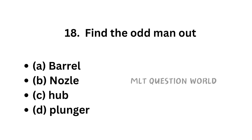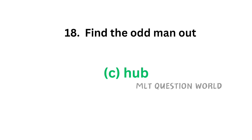Question number 18. Find the odd one out: option A, Barrel; option B, Nozzle; option C, Hub; option D, Plunger. These are the parts of syringe and needle. The correct answer is option C, Hub. Hub is the part of needle, and barrel, plunger, and nozzle are the parts of syringe.